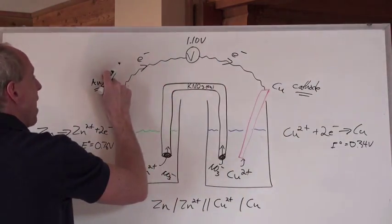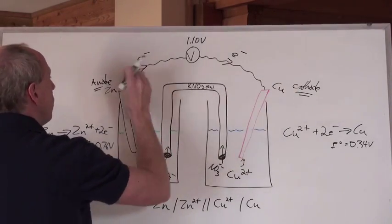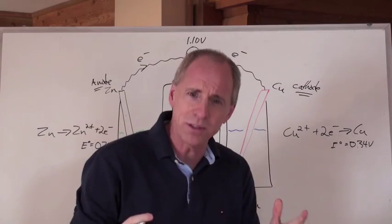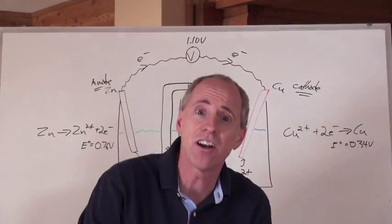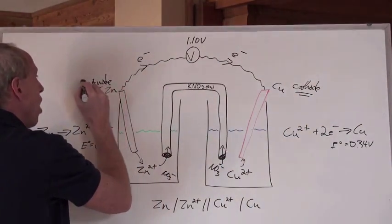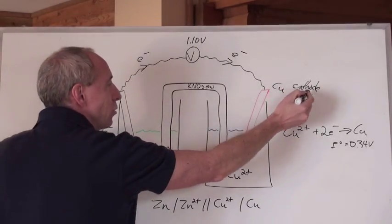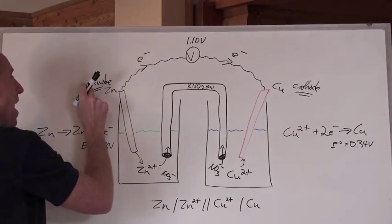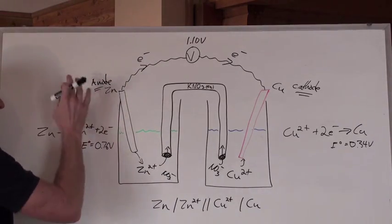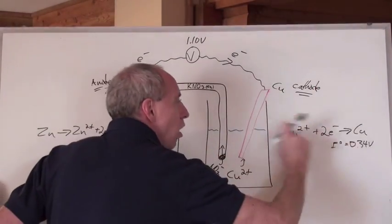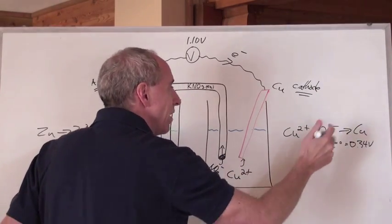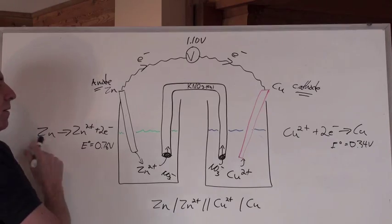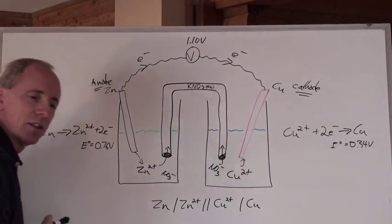Electrons always move from the anode to the cathode. The electrons always go from A to C. How do we know which one's the anode and the cathode again? It's not hard. The anode is oxidation, the cathode is reduction. The vowels go together and the consonants go together. So the anode is always the thing that's undergoing oxidation. The cathode is always the thing that's undergoing reduction. Which is the strong oxidizing agent, which is the strong reducing agent.